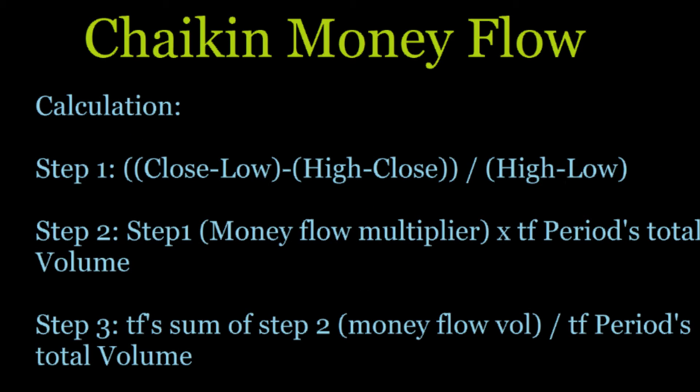The calculation of the Chaikin Money Flow is in three steps basically. Step one is going to be close minus the low, minus the high minus the close, divided by the high minus the low. The next step is going to be to take step one, otherwise known as the Money Flow Multiplier, and multiply that by the time frame's period total volume.